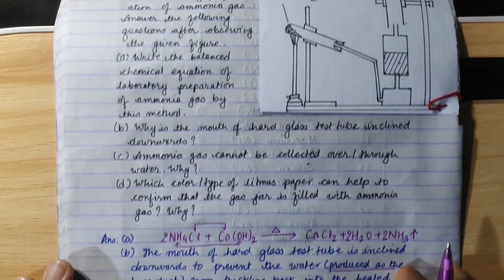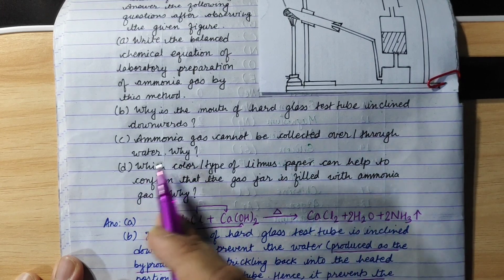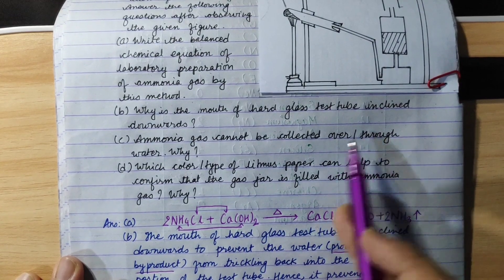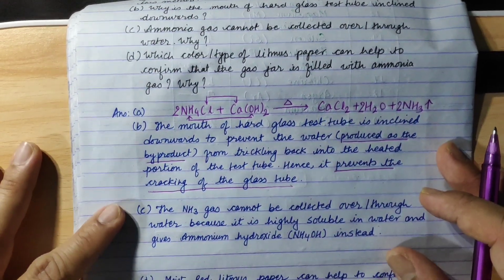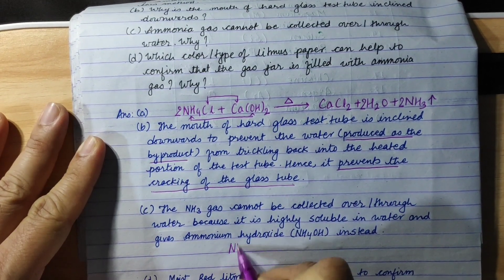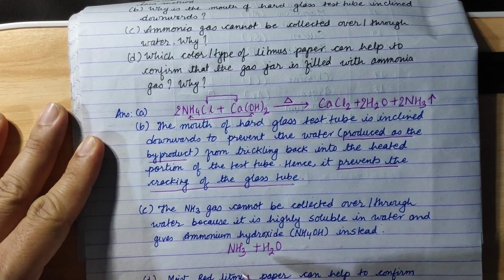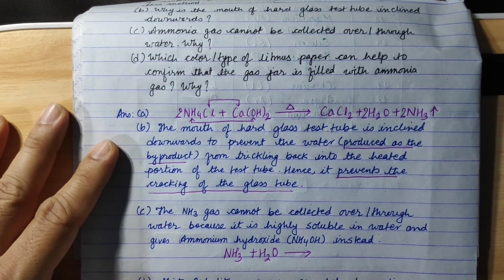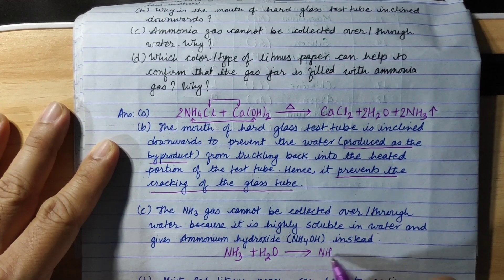Third question: Ammonia gas cannot be collected over or through water. Why? Ammonia gas cannot pass through water. This is because ammonia is highly soluble in water. When ammonia reacts with water, it forms ammonium hydroxide, NH4OH.